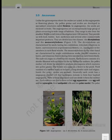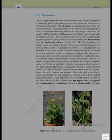Unlike gymnosperms where the ovules are naked, in the angiosperms or flowering plants the pollen grains and ovules are developed in specialized structures called flowers. In angiosperms, the seeds are enclosed in fruits. Angiosperms are an exceptionally large group of plants occurring in a wide range of habitats, ranging in size from the smallest Wolffia to tall trees of Eucalyptus over 100 metres. They provide us with food, fodder, fuel, medicines and several other commercially important products.